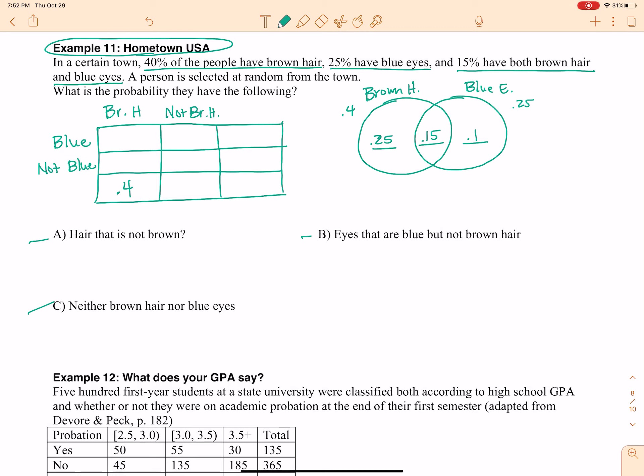25% have blue eyes. All right, so that's going to be my total row here. 15% have both. Well, the both lives right here in my table. All right. So, the rest of the table is pretty easy to fill in.